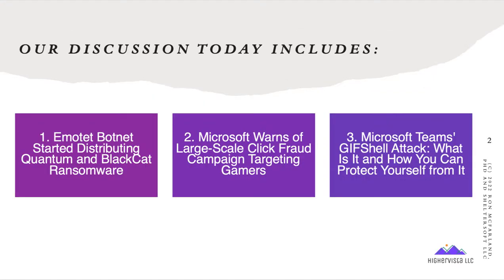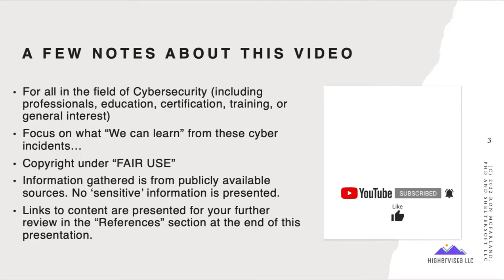We have three topics to discuss today: the Emotet botnet started distributing Quantum and Black Cat ransomware — those are two different types. Number two, Microsoft warns of large-scale click-fraud campaign targeting gamers. And the third one, Microsoft Teams GIF shell attack — what it is and how you can protect against it.